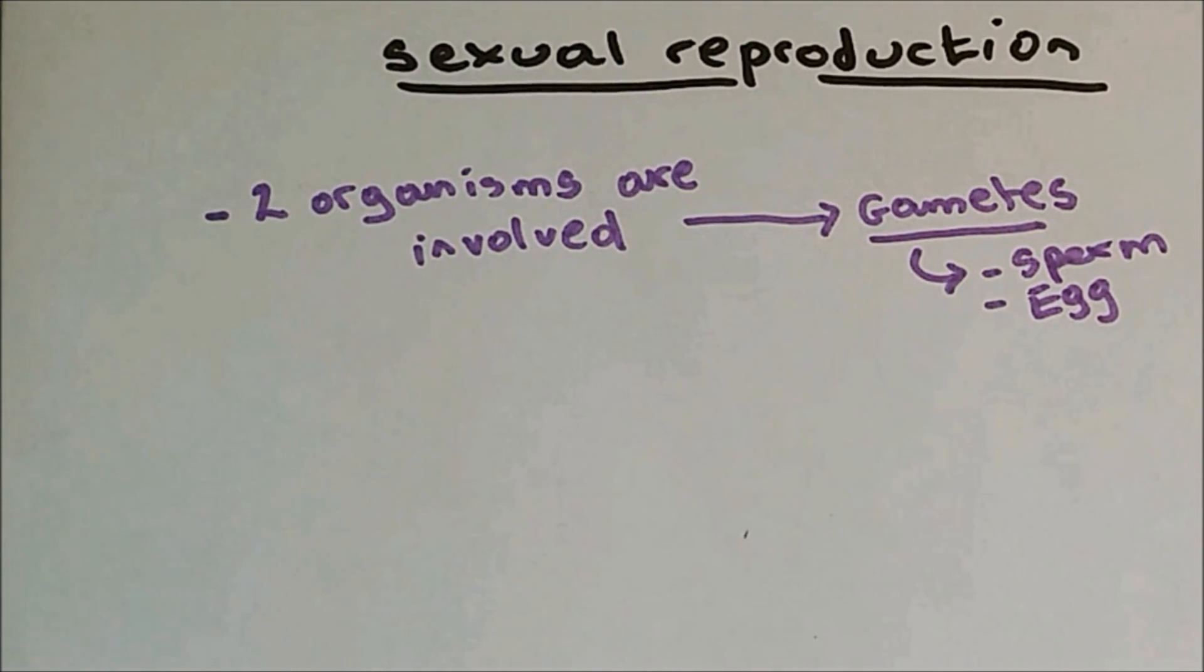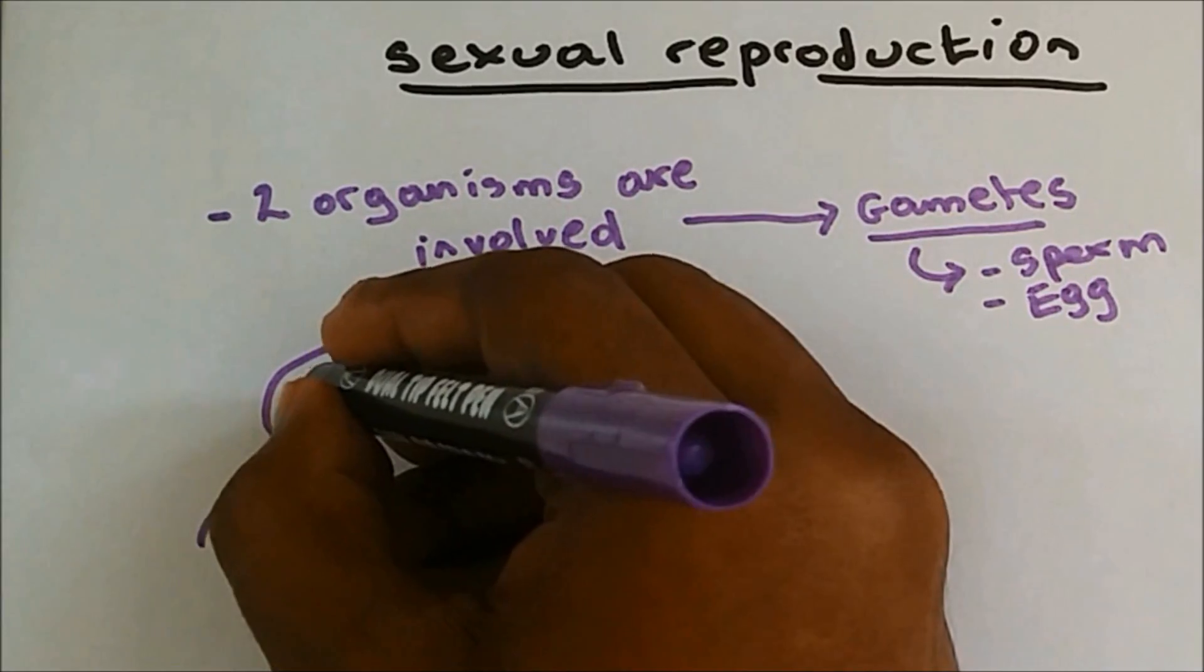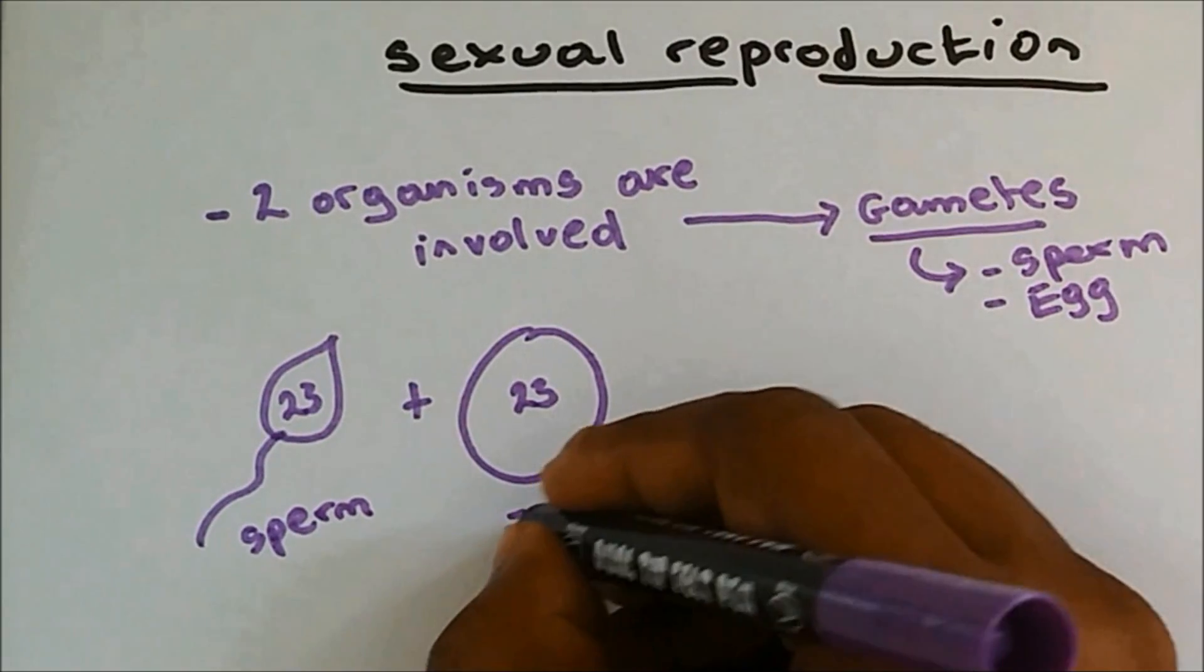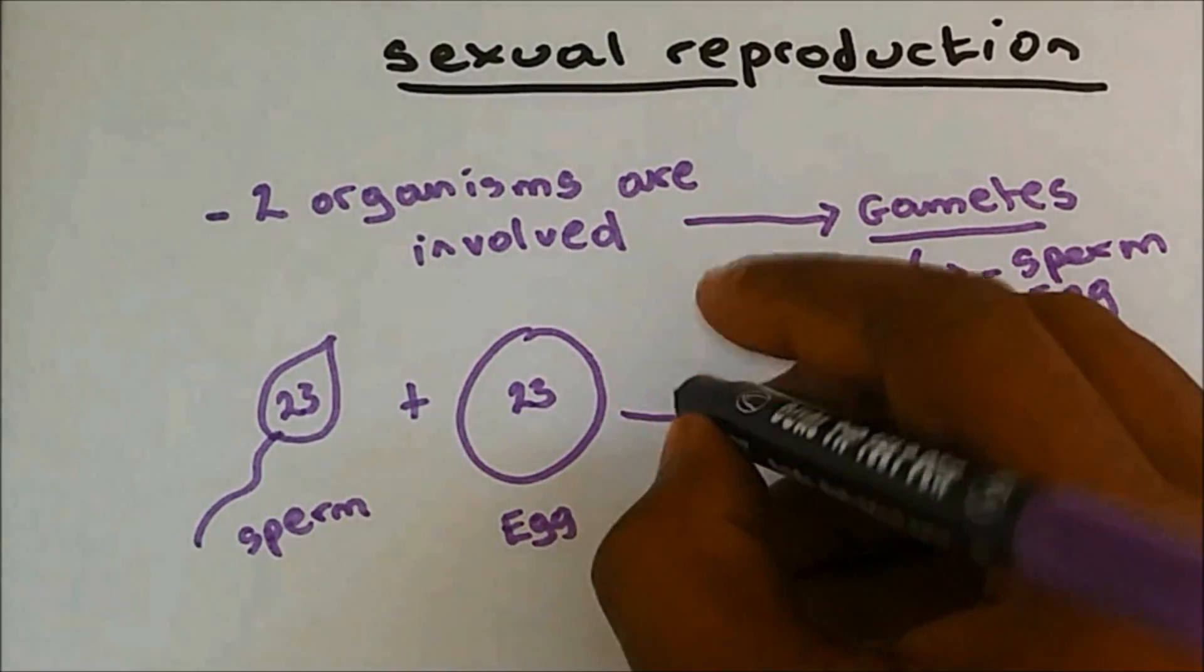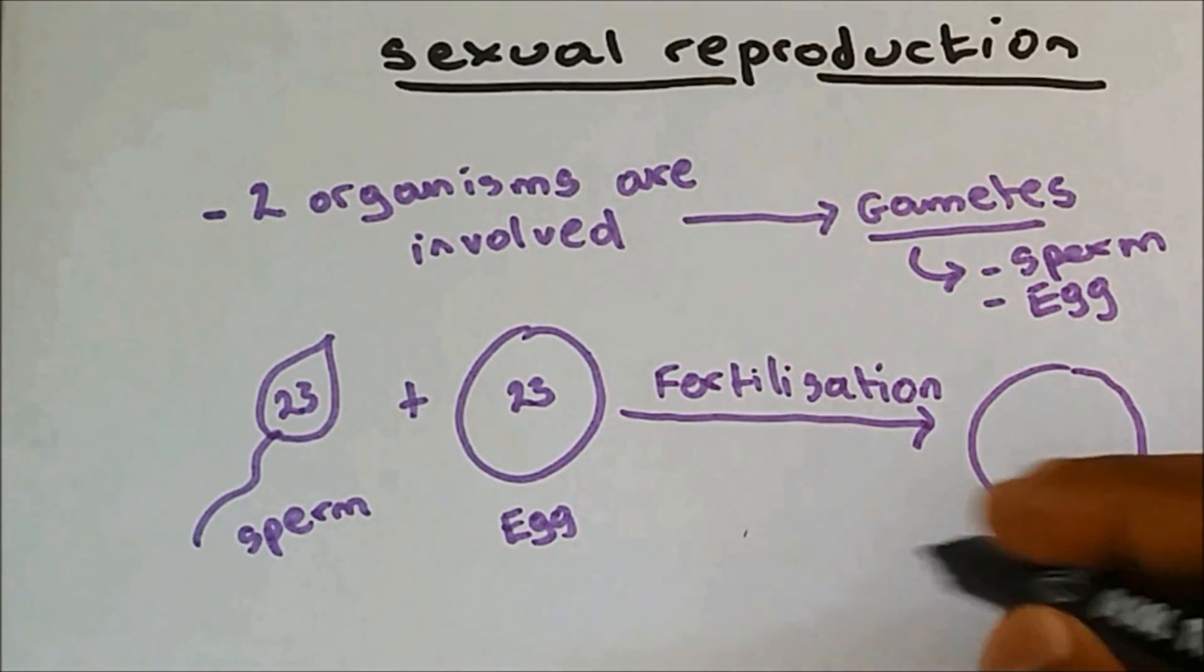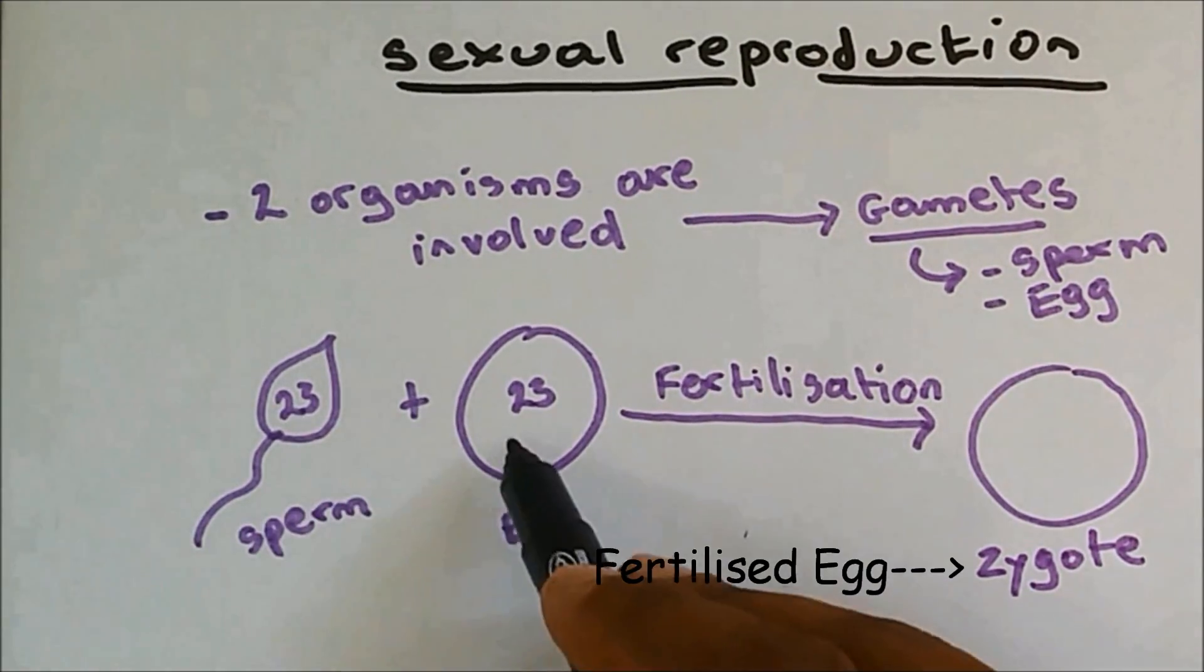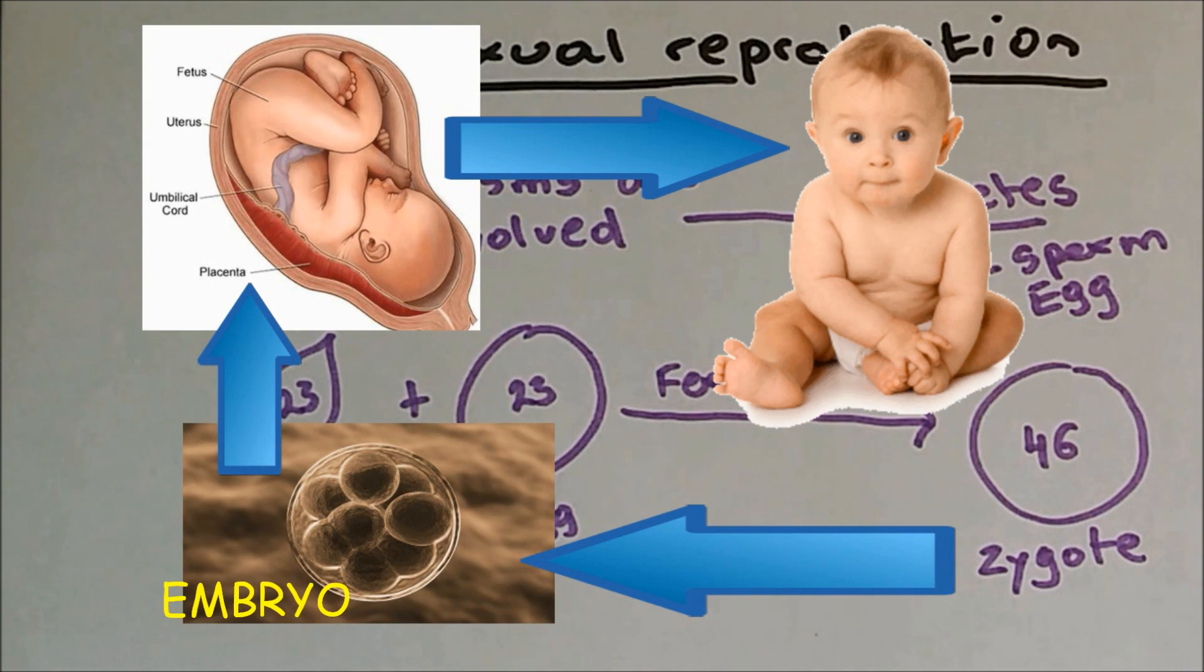Let me draw a diagram to show this. We have a sperm with 23 chromosomes and an egg with 23 chromosomes. The sperm and the egg fuse together in a process known as fertilization. When the egg gets fertilized by the sperm, a fertilized egg is made and this fertilized egg is called a zygote. The 23 and the 23 when combined together make up 46 chromosomes.